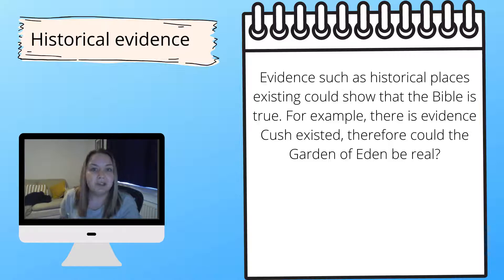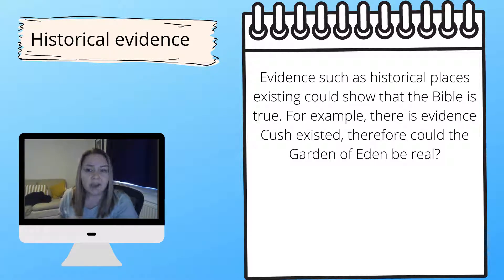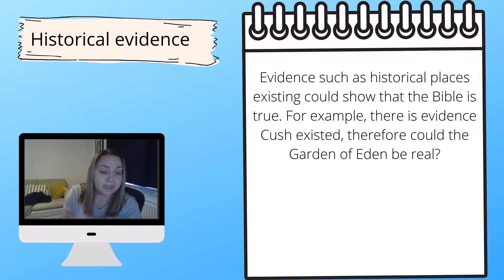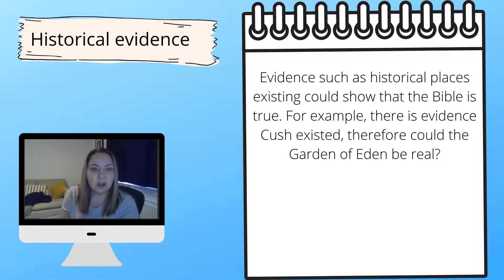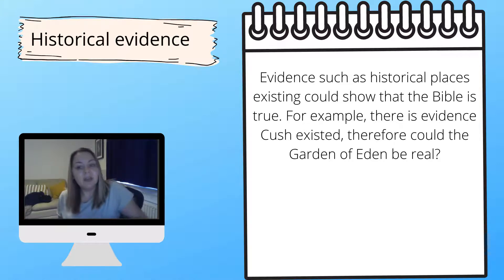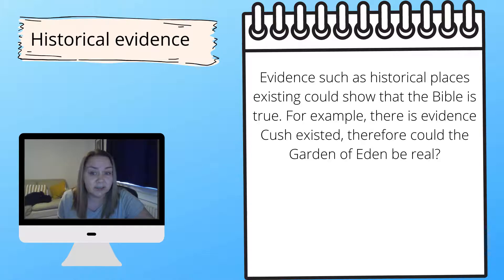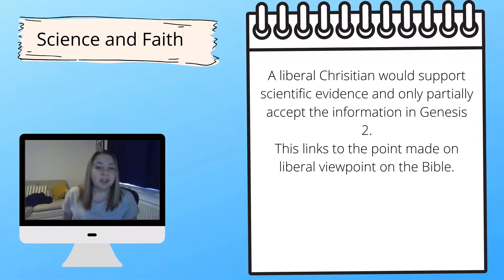Other evidence Christians might use to justify that God created the universe, or to support the reliability of the Bible, is that historical places mentioned in it have been found to exist. For example, they have found evidence that a place called Cush existed thousands of years ago. The name has changed, but if Cush existed, possibly the Garden of Eden could have existed in that place too — therefore they might justify Genesis 2 as an accurate representation of how God created the universe.